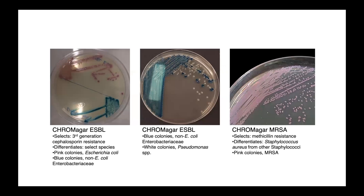Here you can see some examples of selective and differential media. On the far left, we have ChromAgar ESBL — it's selective for third-generation cephalosporin resistance and differentiates based on species. Pink colonies are indicative of E. coli, while blue or turquoise colonies are non-E. coli Enterobacteriaceae. Another ChromAgar ESBL plate shows blue colonies for non-E. coli Enterobacteriaceae and white colonies for Pseudomonas species. On the right, ChromAgar MRSA selects for methicillin resistance — an antibiotic resistance phenotype — and differentiates Staphylococcus aureus from other Staphylococci, yielding pink colonies.